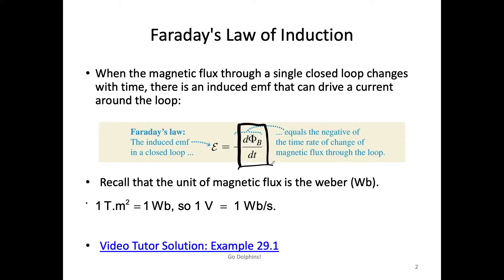Which is dΦ_B/dt. And of course the direction would be resistant to the change of magnetic flux, so we have this negative sign. Your induced EMF would be equal to negative dΦ_B/dt. That's Faraday's Law for one single loop.